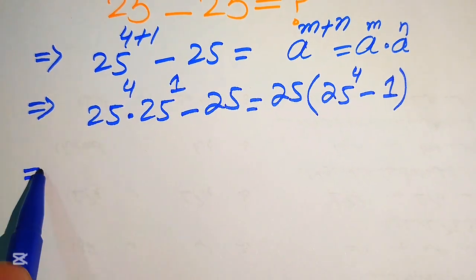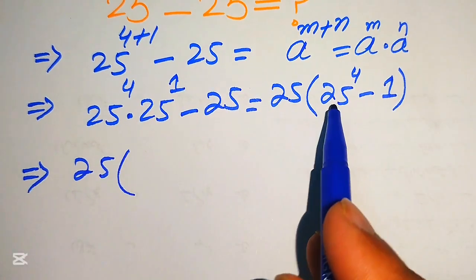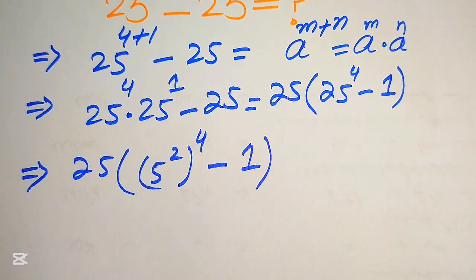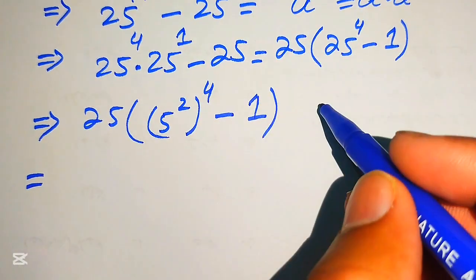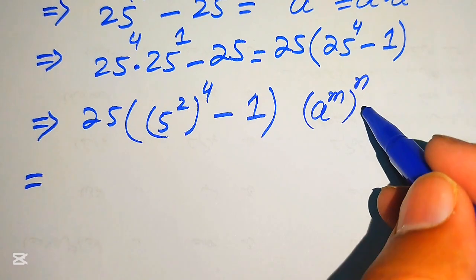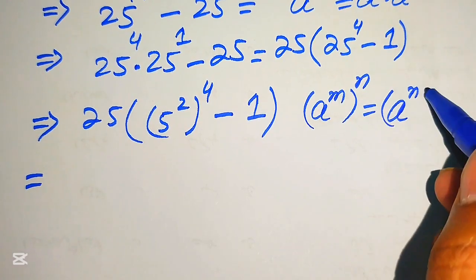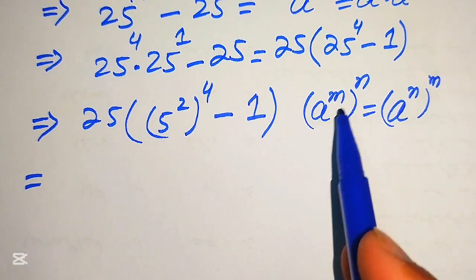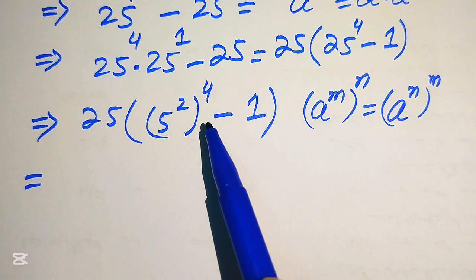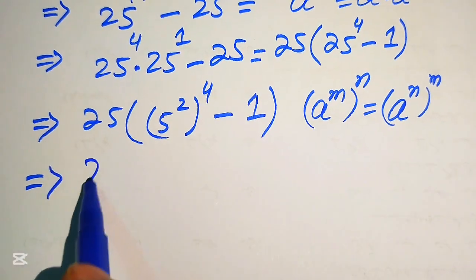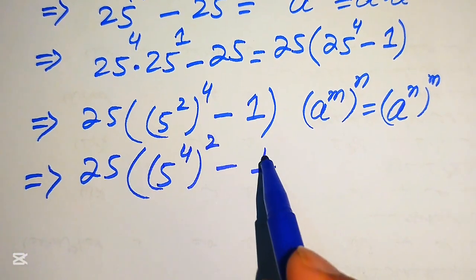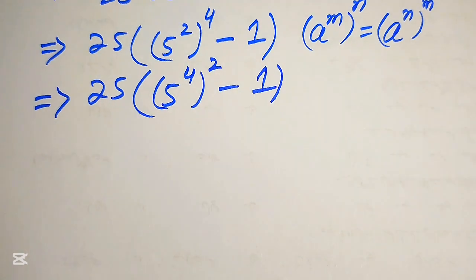Now we know that 25 equals 5 squared, so we replace 25 with 5 squared, and its whole exponent is 4. In the next step, we apply the exponent law: a to the power of m to the power of n equals a to the power of n to the power of m — meaning we can interchange the two exponents. After interchanging, we write it as 5 to the power of 4, whole squared, minus 1.